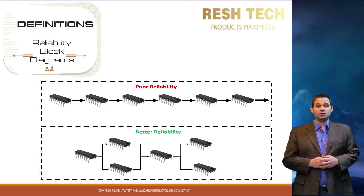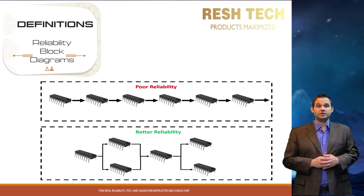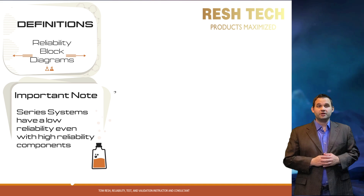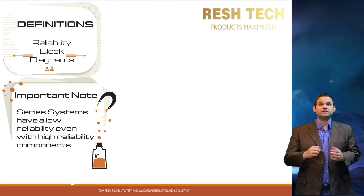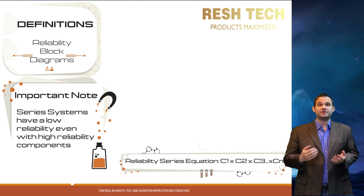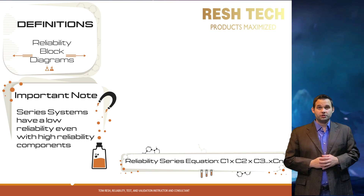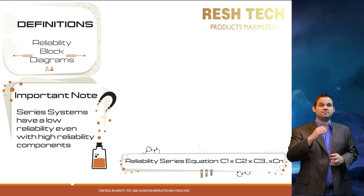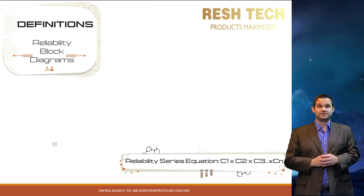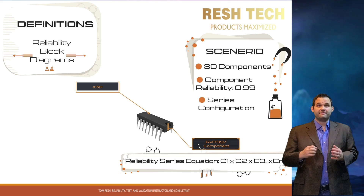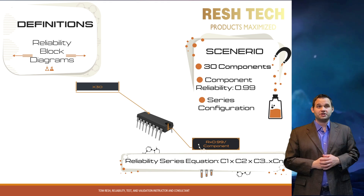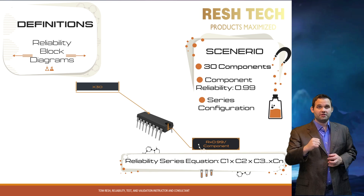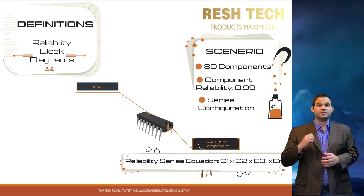Reliability of a system is pretty low if all your components or functions operate in a series-type configuration. Even using a high reliability component, a series system will have a low reliability, which gets worse depending on the number of components and complexity. The equation for reliability of a series system is R1 × R2 × R3 and so forth. For example, if you have 30 components each with a reliability of 0.99 but all placed in series configuration, that's a problem.